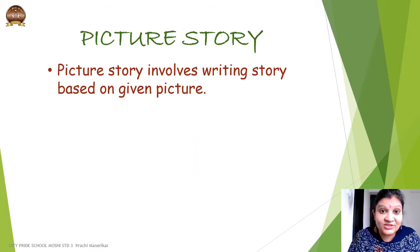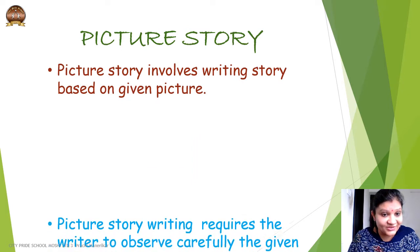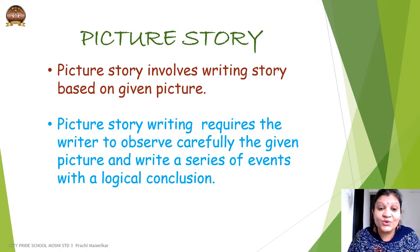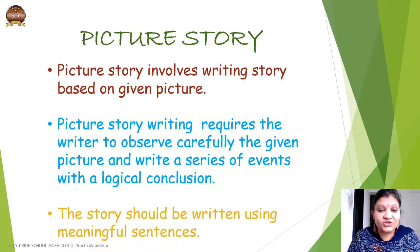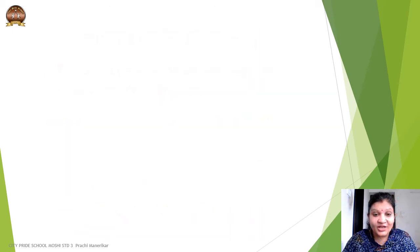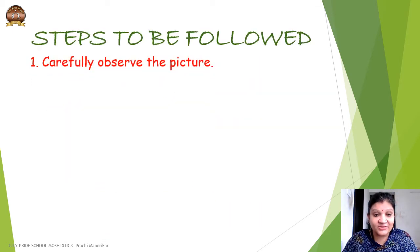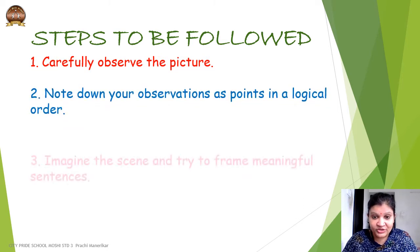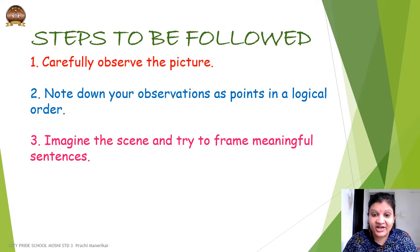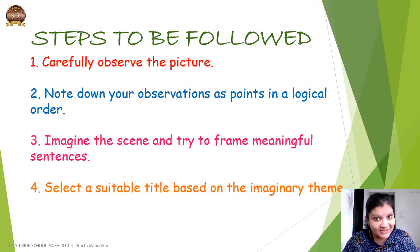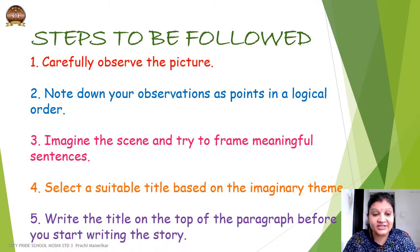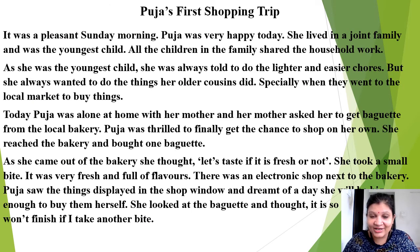Now, the background rules to remember: picture story writing requires the writer to carefully observe the given picture and write a series of events with a logical conclusion using meaningful sentences. Start by carefully observing the picture, note down observations as points in a logical order, imagine the scenes, frame meaningful sentences, select a suitable title based on the imaginary theme, and write the title on top of the paragraph before you begin.